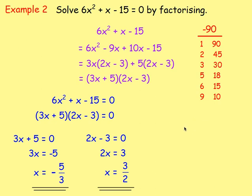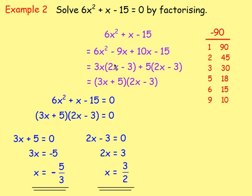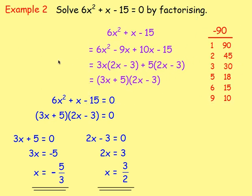Solving by factorising: work it out to the side and then sub in what you get when you factorise. So 6x² + x - 15 = 0 becomes (3x + 5)(2x - 3) = 0. Set each bracket equal to zero and solve for x, giving you the two roots.